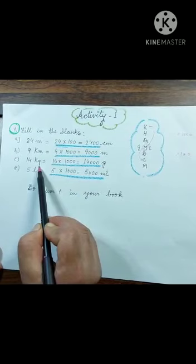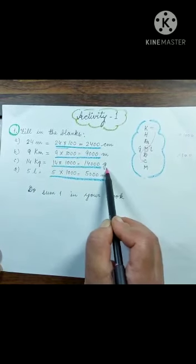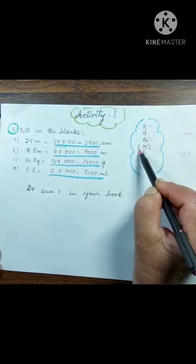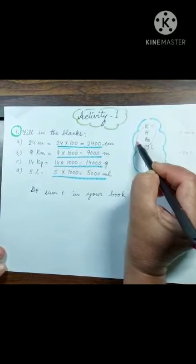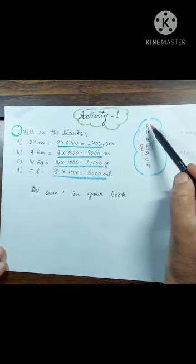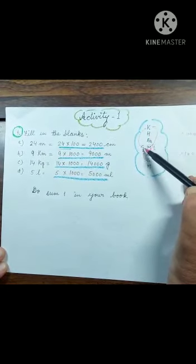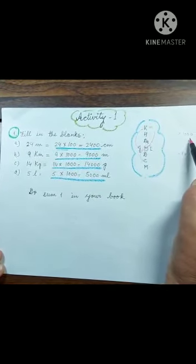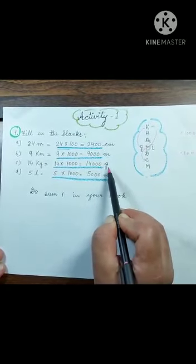14 kilograms given, convert to grams. We will consider grandmother for gram. Kilograms to grams — bigger to smaller, multiply. Three steps down, multiply by one thousand. 14 multiplied by 1000 equals 14,000 grams.